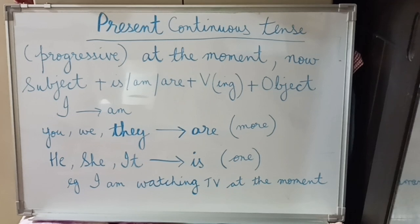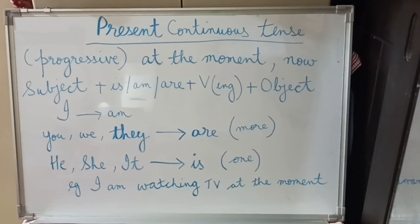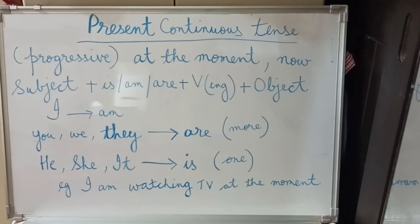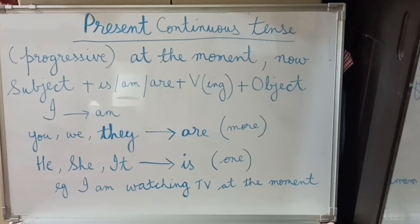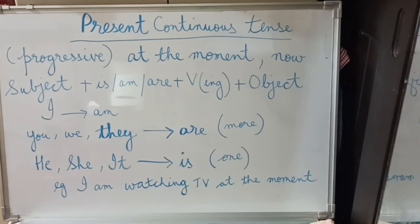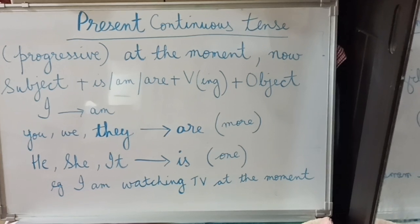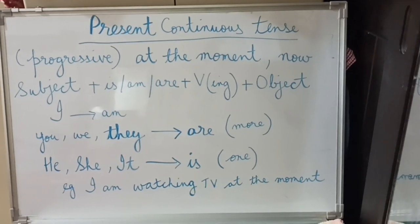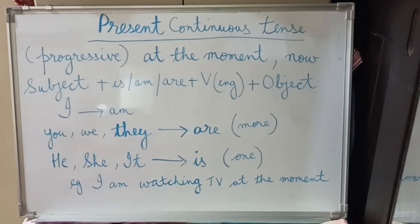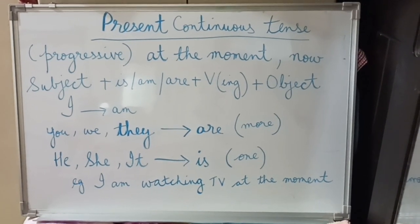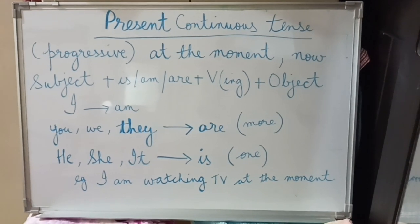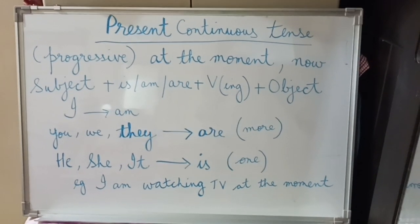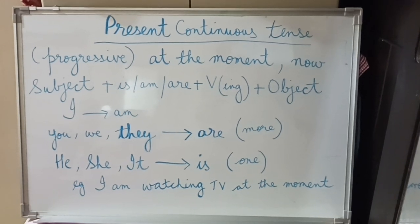I have given an example with 'I': 'I am watching TV at the moment.' So 'I' is the subject, 'am' is the helping verb, 'watching' is the ing form of the verb, and 'TV' is the object. To find the object, ask yourself the question 'what?' after the verb. Watching what? Watching TV. So here 'TV' is the object, and 'at the moment' is the rest of the sentence.